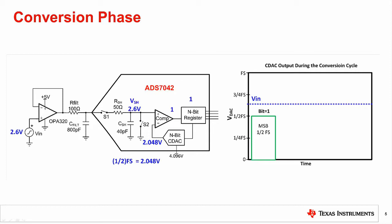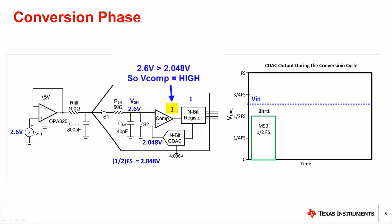Here we see the result of the first comparison for the MSB. The n-bit DAC applies a signal to the negative input of the comparator equal to one-half of the full scale, or 2.048 volts in this example. The other side of the comparator is connected to the 2.6 volts from the sample and hold capacitor. Since the sampled voltage is greater than the DAC voltage, the output of the comparator is logic 1. The MSB voltage will remain on, and subsequent DAC outputs will include this value.